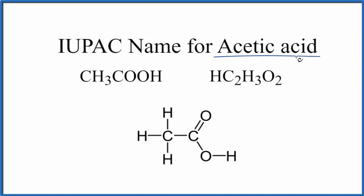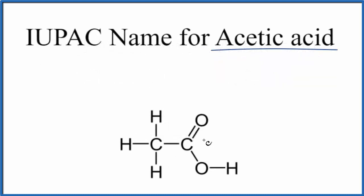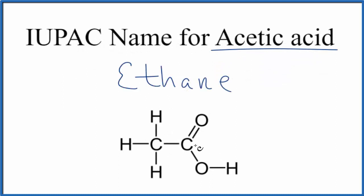There's also a systematic name called ethanoic acid, and here's how we come up with that name. Since it's systematic, there are a set of rules we can use. Think about it as a two-carbon chain with hydrogens around it — that's called ethane. But we've got a carbon here with a double-bond oxygen and an OH attached to the other carbon.